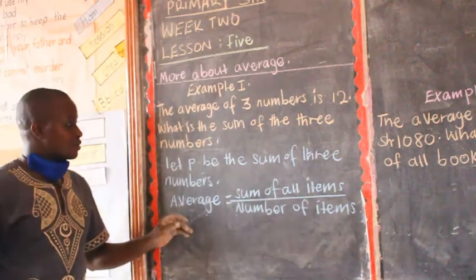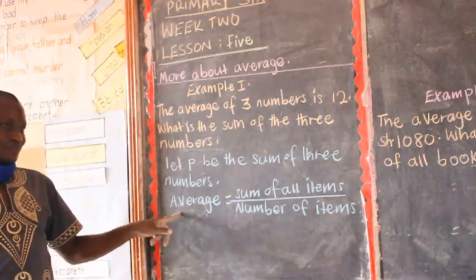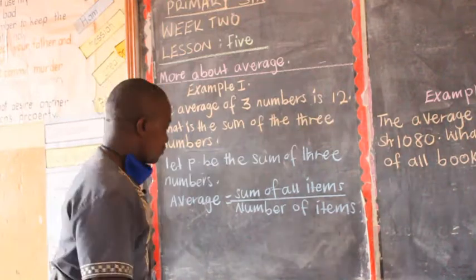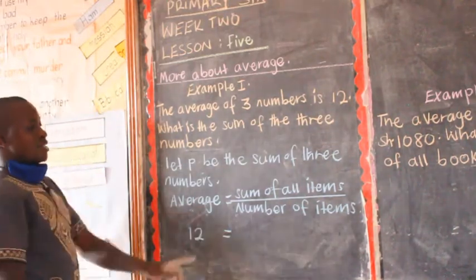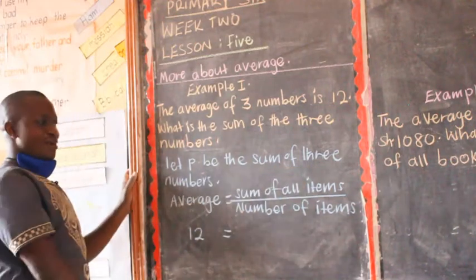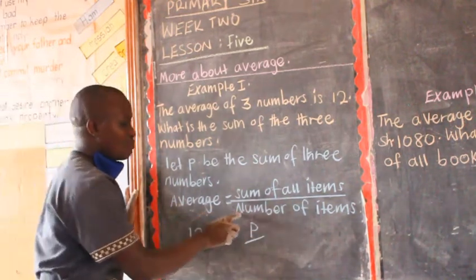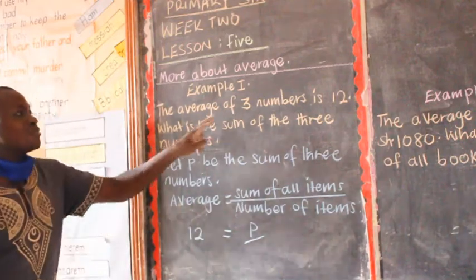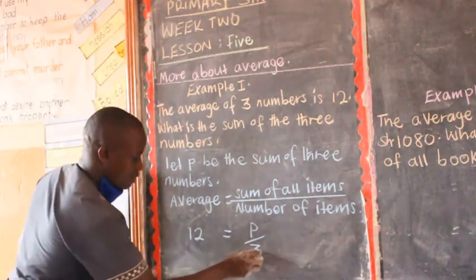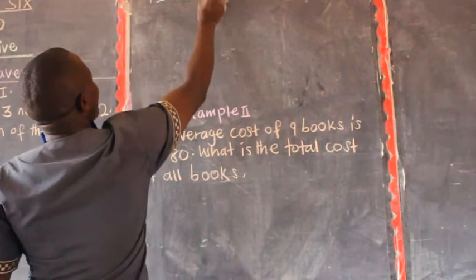In this question, it tells us the average of three numbers is 12. So we replace the word average with 12. We know the average is 12, so we write: 12 is equal to the sum of all numbers, which is P, divided by the number of items, which is three. So: 12 equals P out of 3.